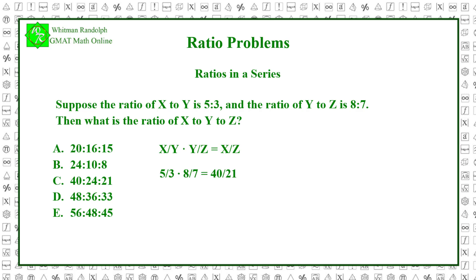The ratio of x to y is 5 to 3, which can be expressed as 5 to 3 equals 40 to 24. Putting these together, we see that the ratio of x to y to z is 40 to 24 to 21. So, the correct answer is C.